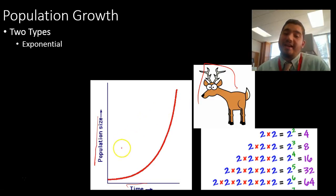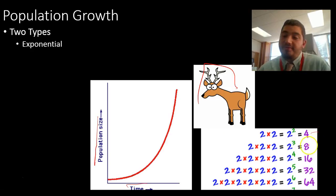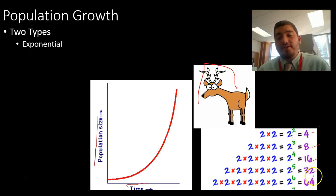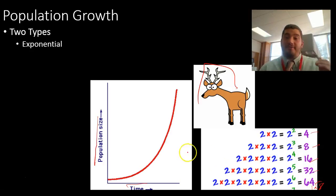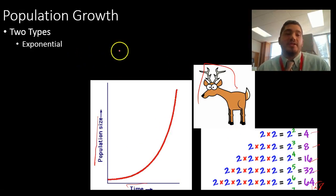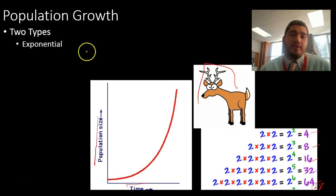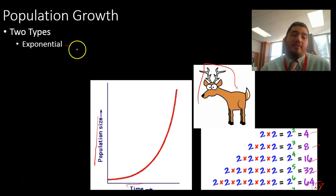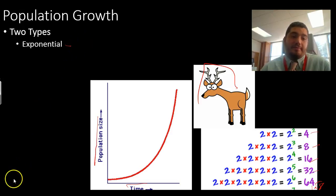This is exponential growth. It would be as if we started with four organisms that doubled to 8, 16, 32, 64, 128, and just kept growing and growing. Even though it starts out slow, we end up with a huge population. Exponential growth is usually found when we have new organisms or the beginning of a community.